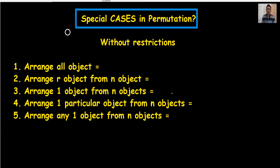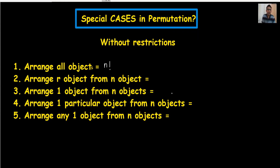Hi everyone, welcome back to my channel Vertex Manojwai. Special cases in permutation without restriction. As I told you in the last video, permutation means arrangement. When we are arranging all the objects, we use the formula n factorial — where total objects are n — so we write n factorial or n P n.